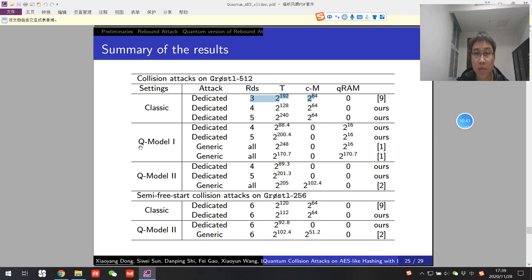In Q-model 1, we need 2 to 16 quantum memory. And in the second model, we don't need QRAM. And the time complexity is better than CNS attacks.